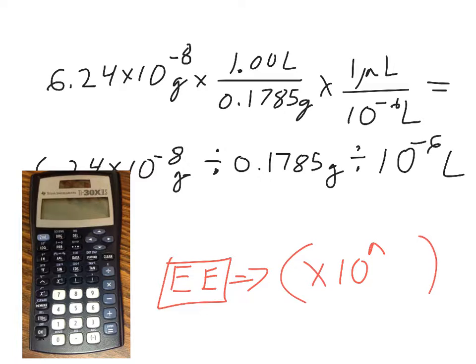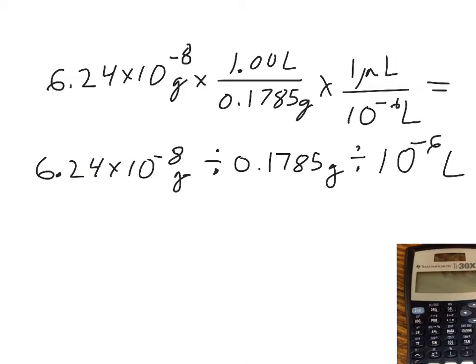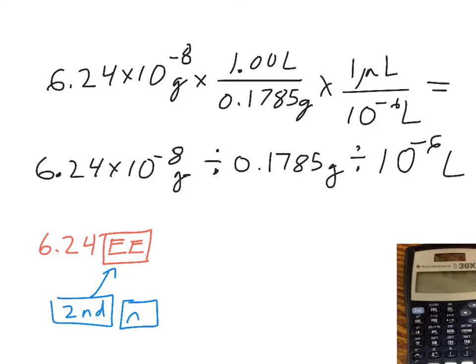So to punch in this equation, all we'd have to do is hit 6.24. Then I'd hit that EE button on my calculator, hitting the second button and then the X to the negative 1 button. So I'd hit 6.24 EE negative 8,